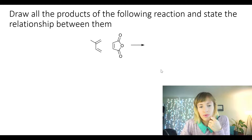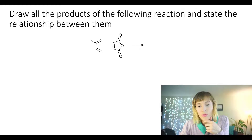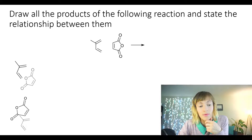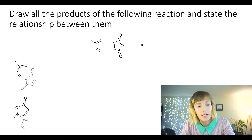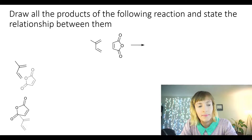The way that I would approach this problem is I would take the diene and the dienophile and stack them on top of each other in the configuration that would result in the Diels-Alder reaction. There are two ways in which these two reagents could react with each other. In one scenario, the dienophile could react with the diene from the bottom, and in the other scenario, the dienophile would react with the diene from the top. In the first scenario, when the dienophile is on the bottom, notice that the configuration here is endo.